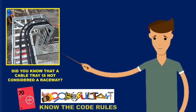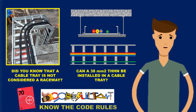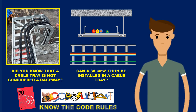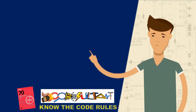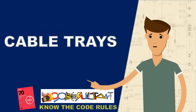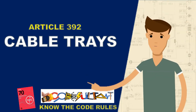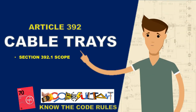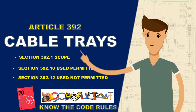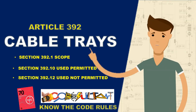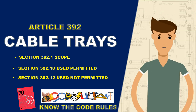Did you know that a cable tray is not considered a raceway? Can a 3/0 AWG THHN be installed in a cable tray? Hello everyone. Today we will be discussing Article 392. In this video, we will cover the basic types of cable trays, what is permitted and prohibited for use, and the requirements for installation as outlined in Sections 392.1 to 392.12. Let's dive right into our discussion.